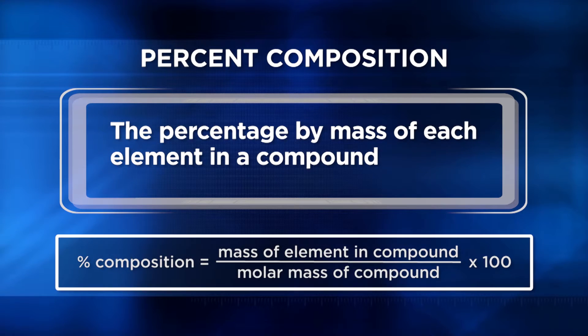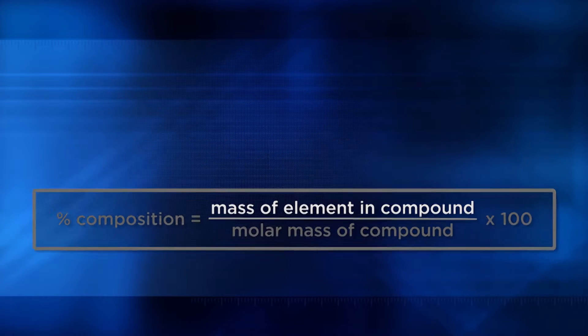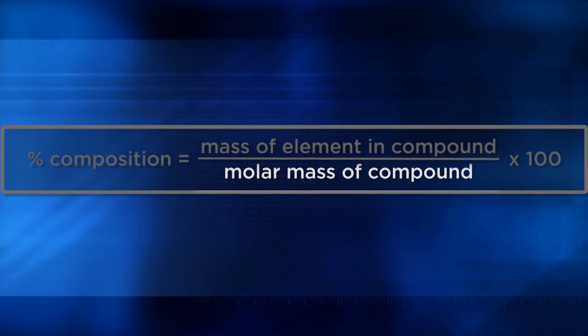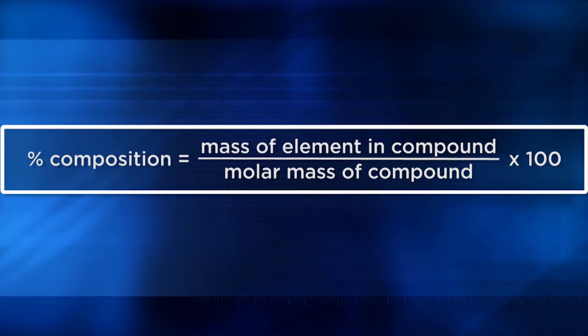That's similar to the way percent composition of elements works. With elements, though, you need to know how to calculate molar mass. Percent composition problems are pretty straightforward if you know the empirical formula. You find the mass of a particular element in the compound, then divide that by the total molar mass of the compound, then multiply it by 100 to convert it to a percentage.